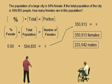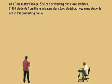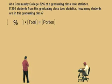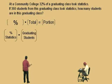Let's continue on, Charlie. Don't get scared. At a community college, 32% of the graduating class took statistics. If 360 students from this graduating class took statistics, how many students are in the graduating class? Just read and translate. Here's our format: percent times total is a portion. Our percentage is the percent statistics, our total is the number of graduating students, and our portion is the statistics students.